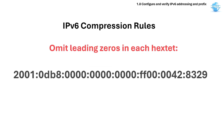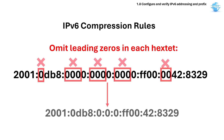We can also omit leading zeros in each hexadecimal group. Leading zeros can be dropped to shorten the address. Keep in mind that only the leading zeros can be dropped — we cannot drop any zero in the middle or at the end of a group.